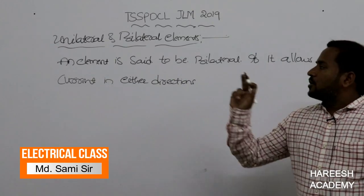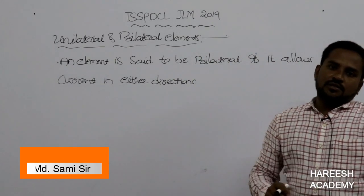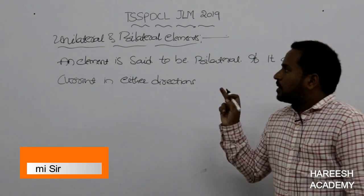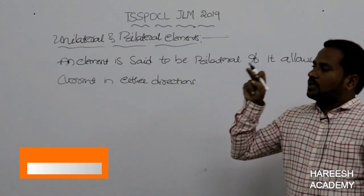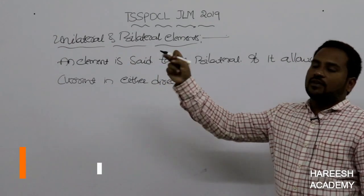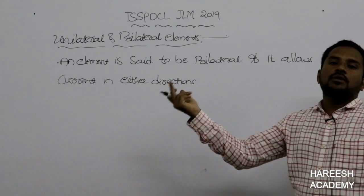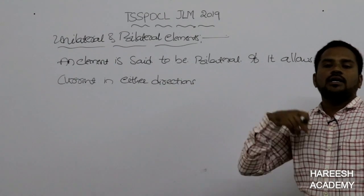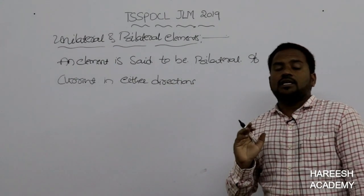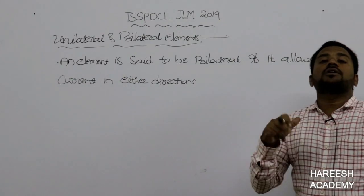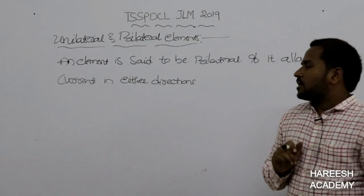If it allows current in one direction, it is unilateral. If it allows current in two directions — meaning you can send current this way or that way — if it allows current to flow both ways, we call it a bilateral element.